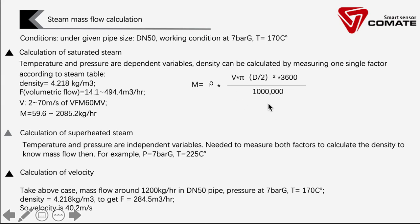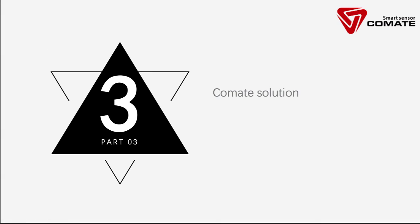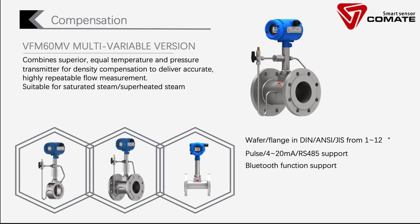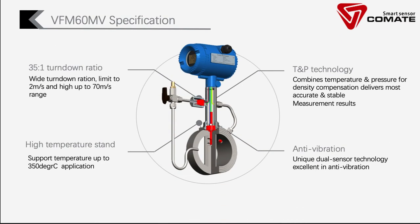Using this same equation, we now understand that temperature and pressure both matter in the steam measurement system. From the previous tables, we know the vortex meter is the most popular and commonly used stable technology in steam systems. I'd like to introduce the Comet multivariable vortex flow meter, which combines temperature and pressure compensation with a 35 to 1 turndown ratio, ranging from 2 meters per second up to 13 meters per second. It also supports temperatures up to 350 degrees Celsius and features unique dual sensor technology that excels in anti-vibration performance.